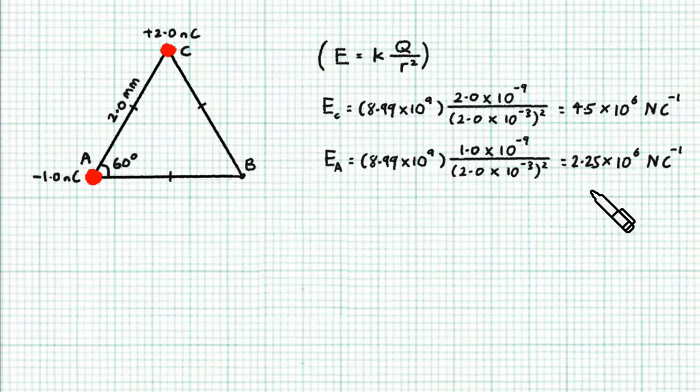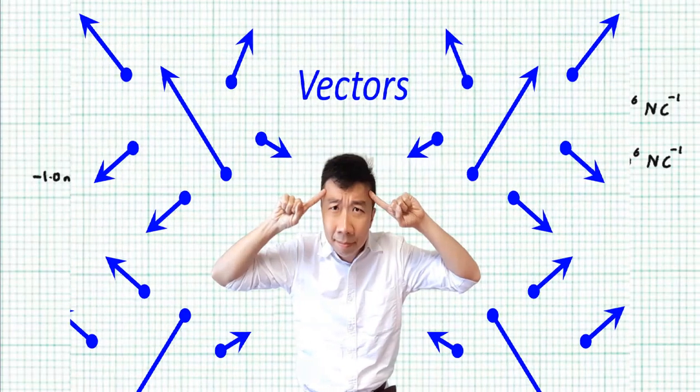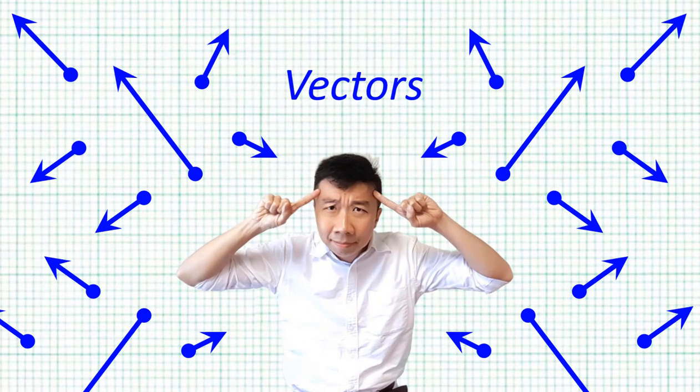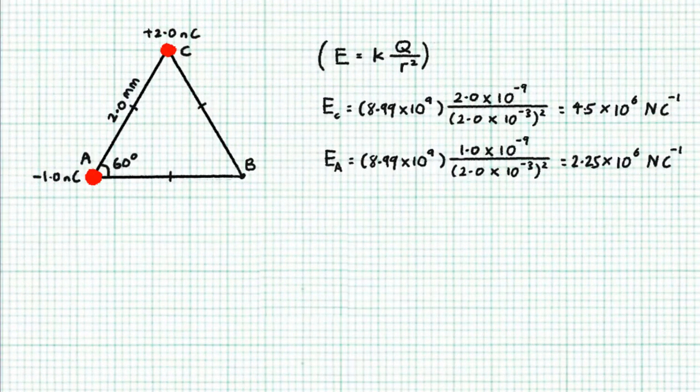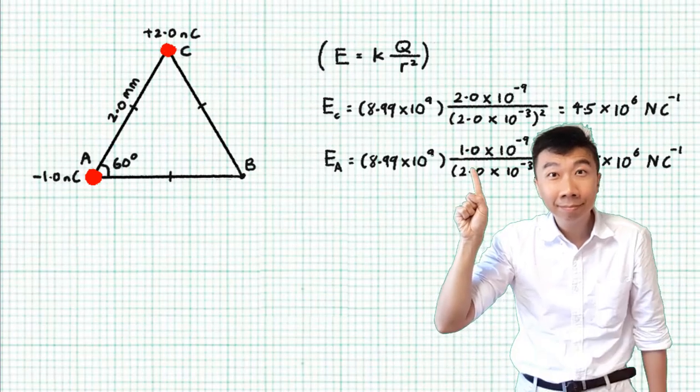Not so easy, because electric field strength is a vector. The directions matter and we're going to do a vector summation. Notice that I didn't bother to include the sign of the charge in the calculations. That's because all we want from the formula is the magnitude of the field strength. As for the direction, we're going to figure it out from the context of the question anyway.